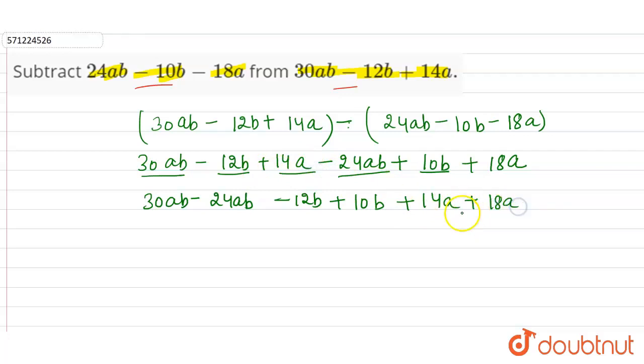So 30 minus 24 is 6ab. Now minus plus is minus, and sign will be of the greater one, so minus 12 minus 10 is 2, so 2b. And 14 plus 18, 14a plus 18a